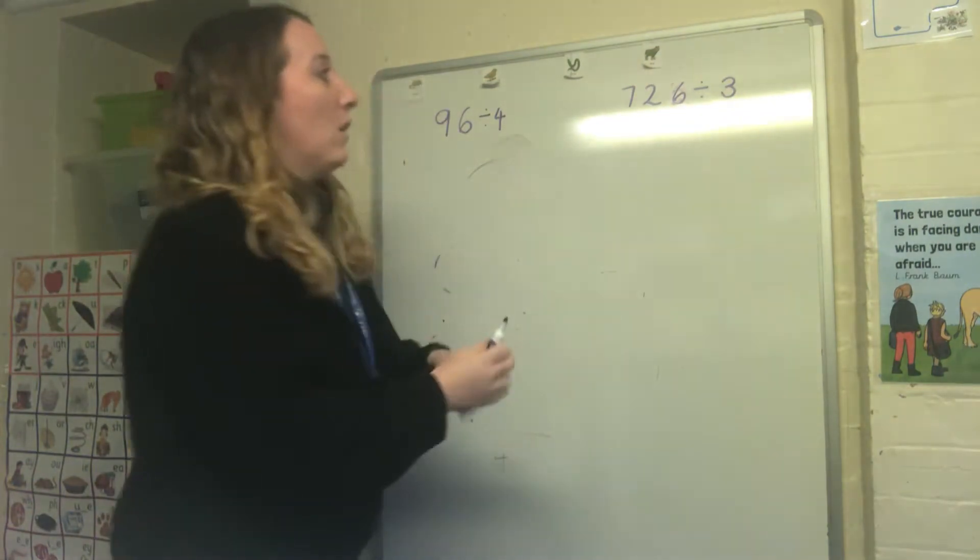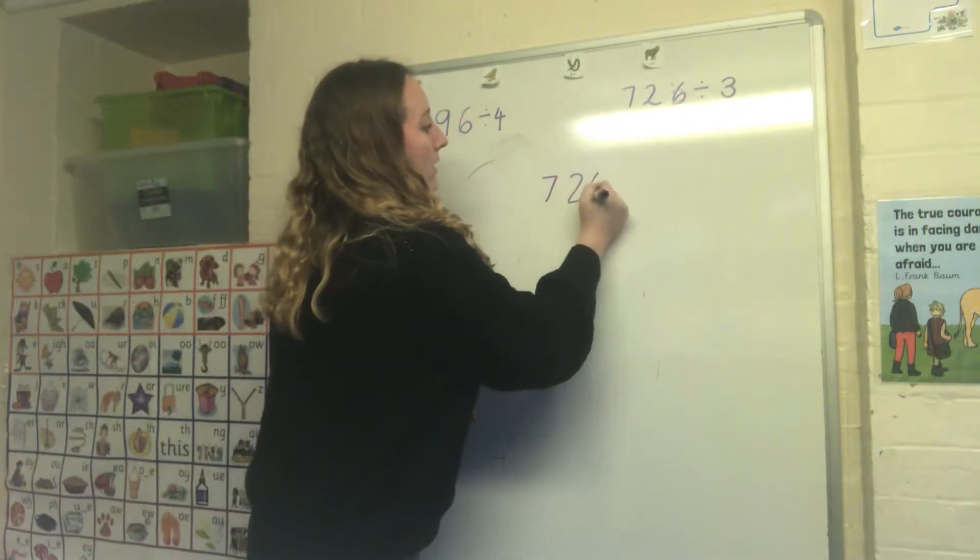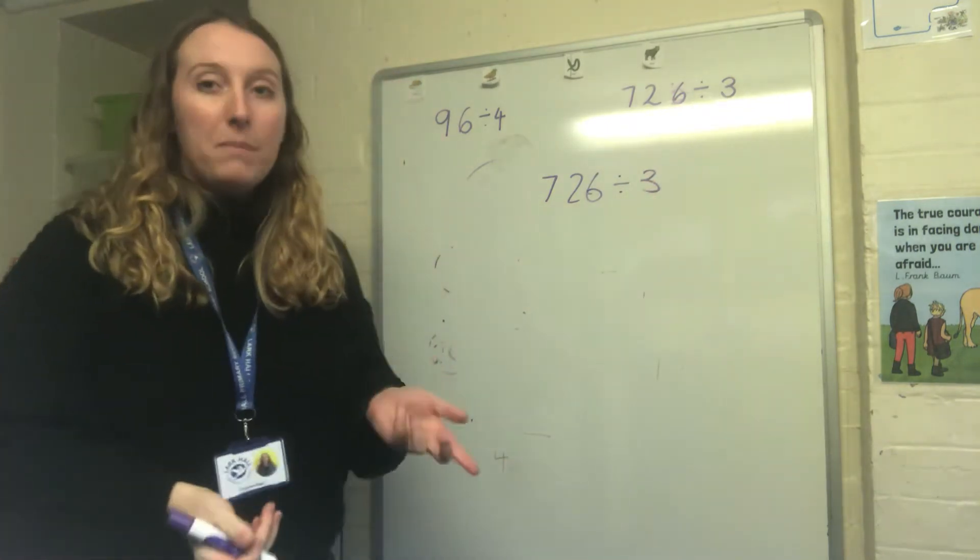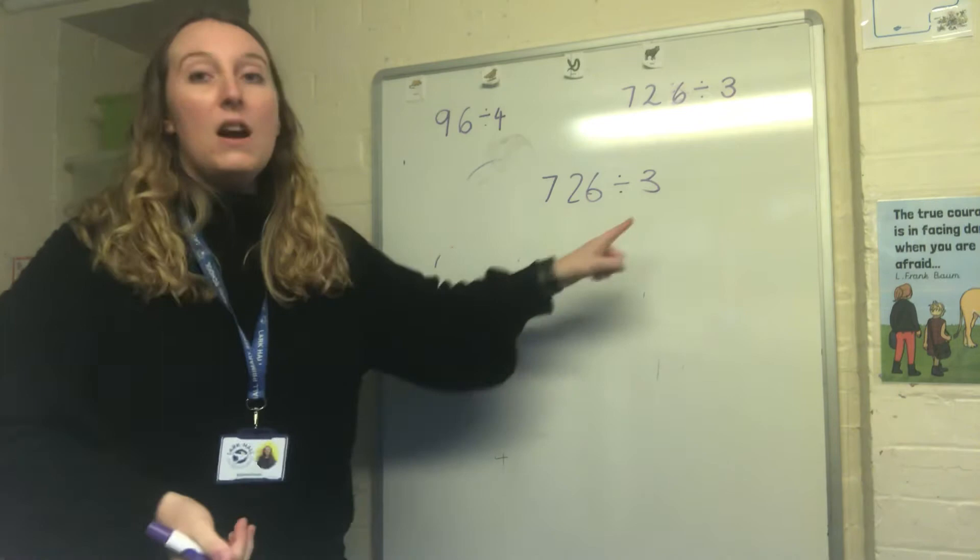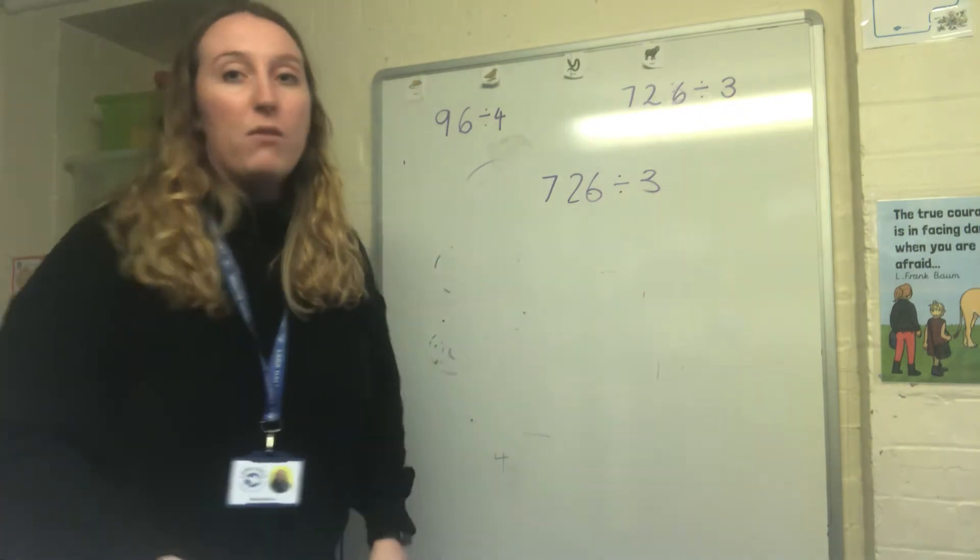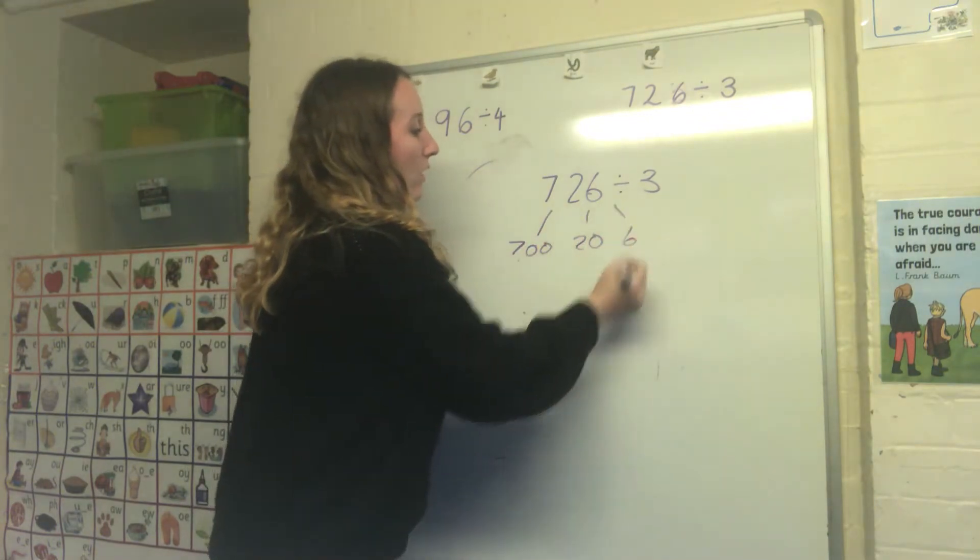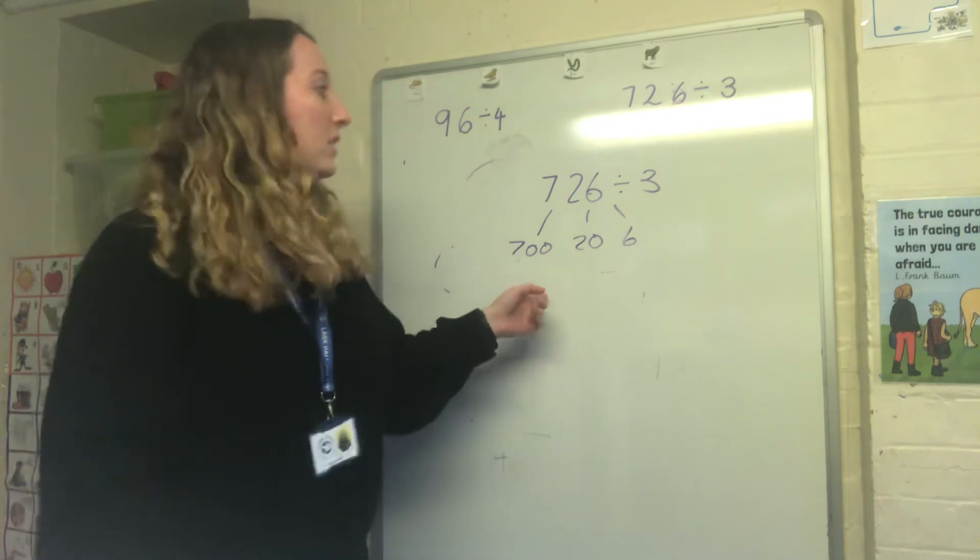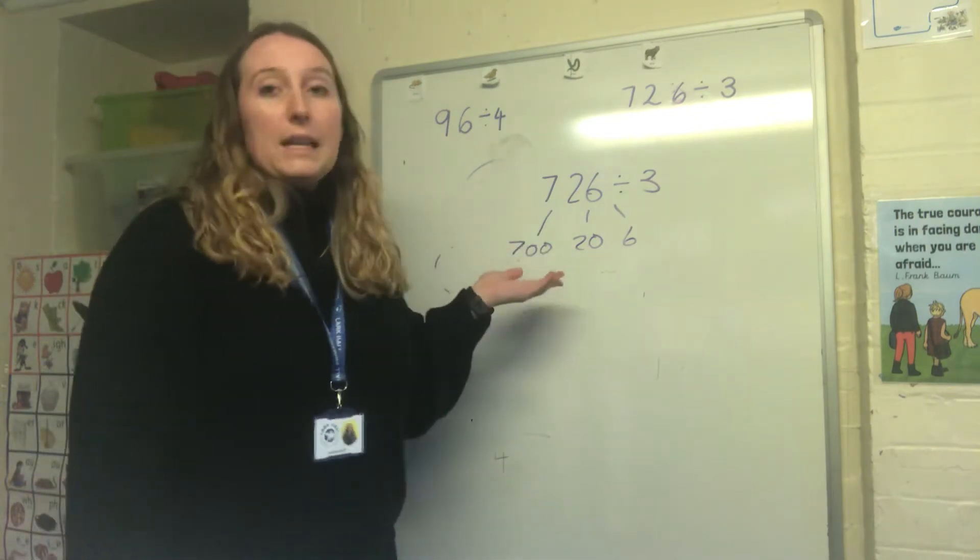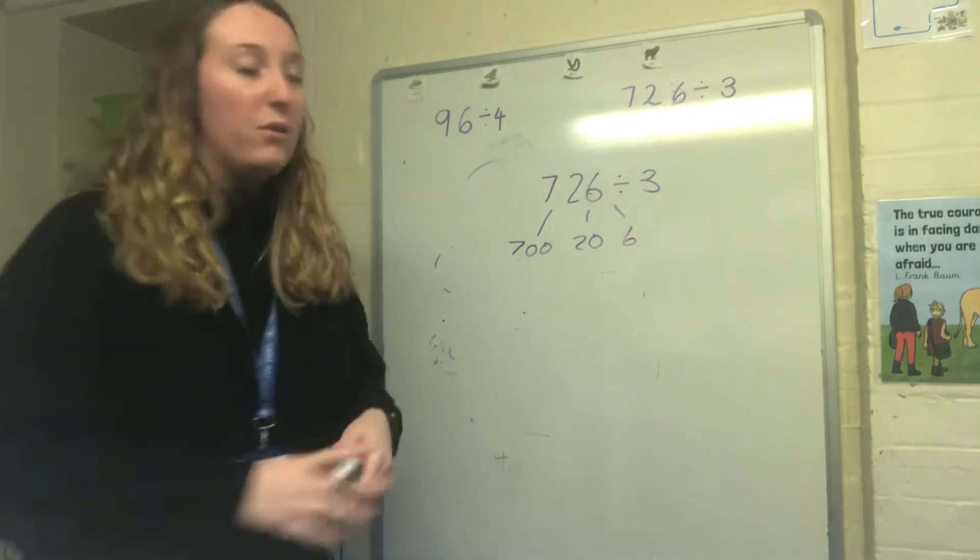So this time we're going to do a three digit number divided by one digit number. So I'm looking at 726 divided by 3. Again when I'm partitioning 726 I need to be careful about the numbers I partition into and make sure they're easy to divide by 3. So for example, it's not a good idea for me to partition my number into hundreds, tens and ones in this example because I don't know easily what 700 divided by 3 is. So I'm not going to pick those numbers because they're not very helpful for me.